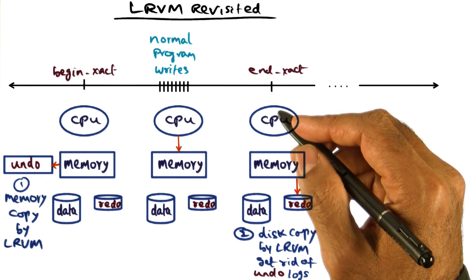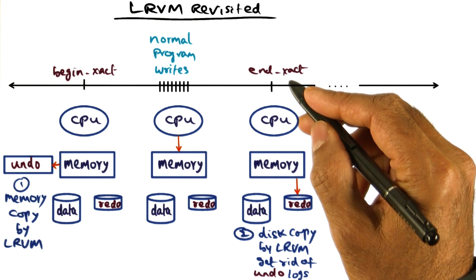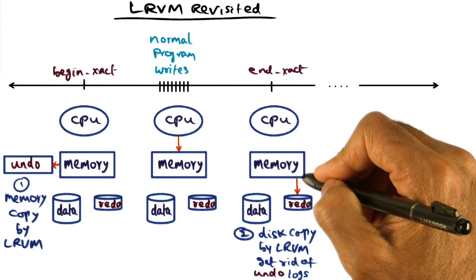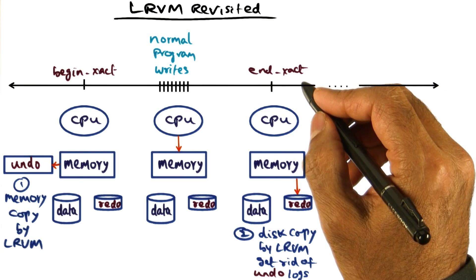And that's why LRVM provides the no flush option in end transaction call, which allows an application to tell LRVM, write it out to the disk but don't stop me from progressing further in my computation.